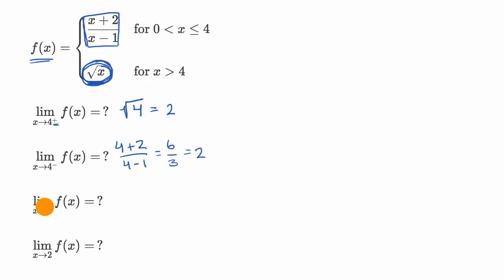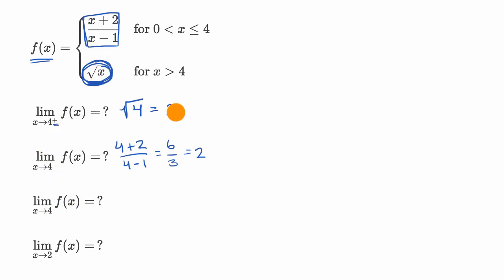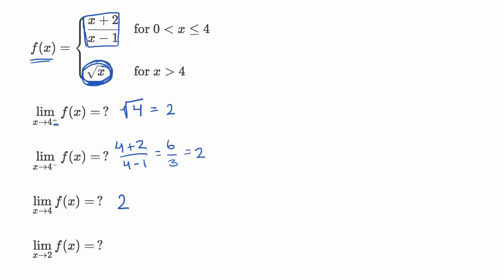If we want to find the limit of f of x as x approaches four, this is a good scenario, because from both the left and the right as we approach x equals four, we're approaching the same value. We know that in order for the two-sided limit to exist, you have to be approaching the same thing from the right and the left — and we are — so this is going to be equal to two.